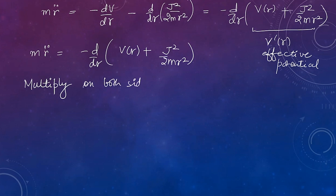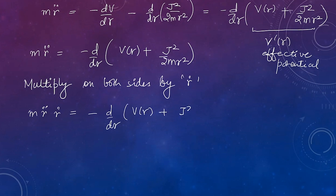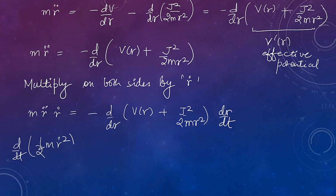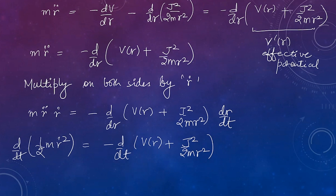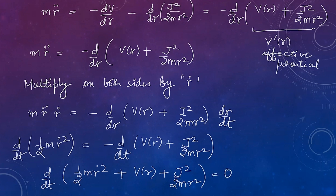Multiplying the whole equation on both sides by r-dot: m r-double-dot times r-dot equals minus d/dr of J-squared over 2mr-squared, times dr/dt. The term m r-double-dot r-dot can be written as the time derivative of one-half m r-dot-squared. The right side becomes minus d/dt because dr/dr cancels, leaving a time derivative. Combining the three terms gives the time derivative of one-half m r-dot-squared plus V(r) plus J-squared over 2mr-squared equals zero.